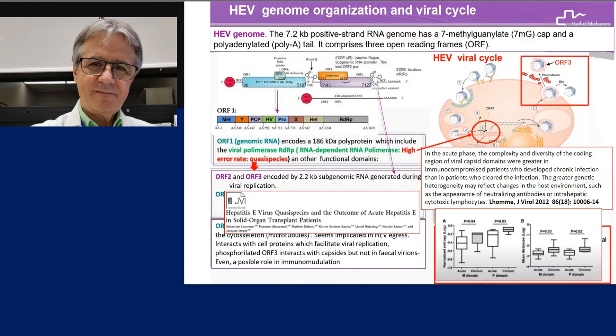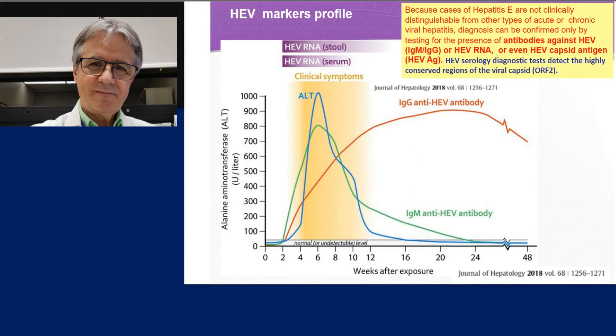The complexity of the viral population is not only a question of knowledge — it seems related to some clinical situations. This is a very new development. In fact, it seems that in the acute phase, the complexity and diversity of the coding region of viral capsid domains is greater in immunocompromised patients who develop chronic infection than in patients who clear the infection. Therefore, the quasi-species complexity is important.